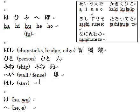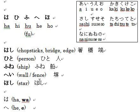Next word is ほし, typed H-O-S-H-I. ほし means stars. You type H-O-S-H-I, and the kanji is this one.